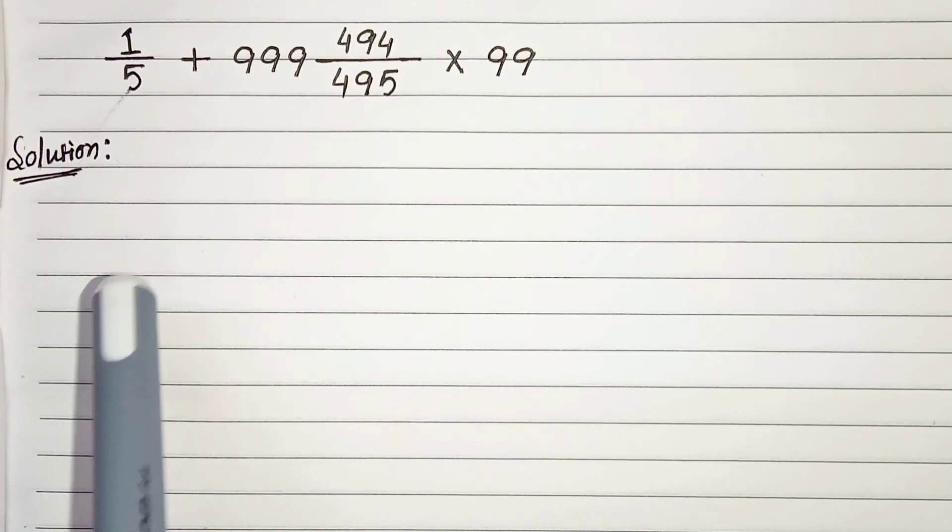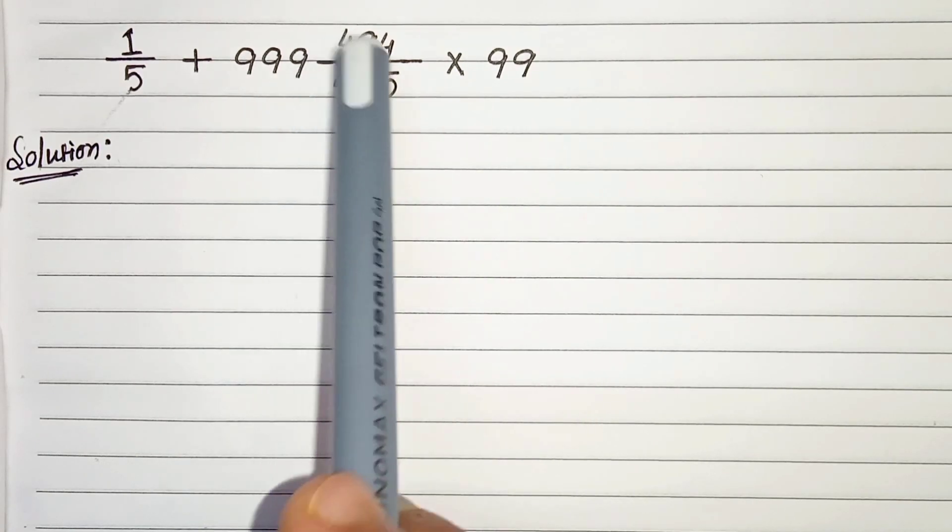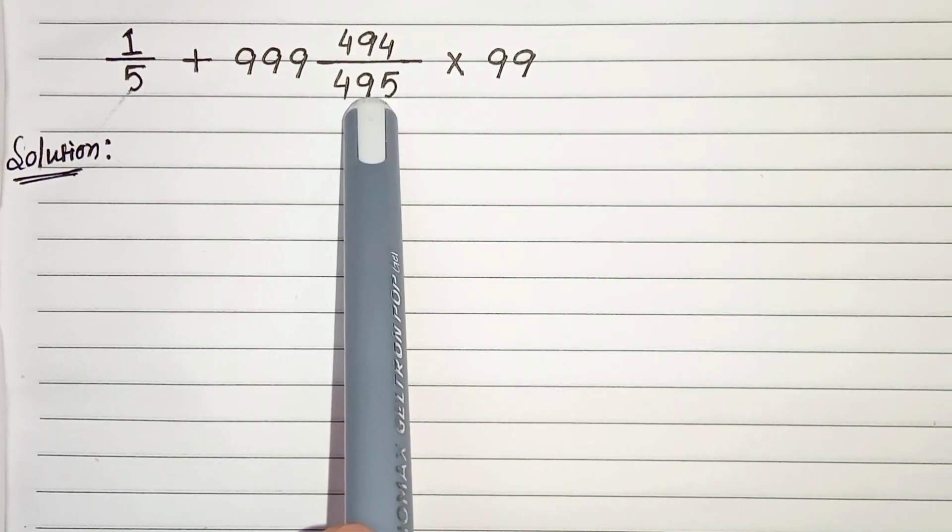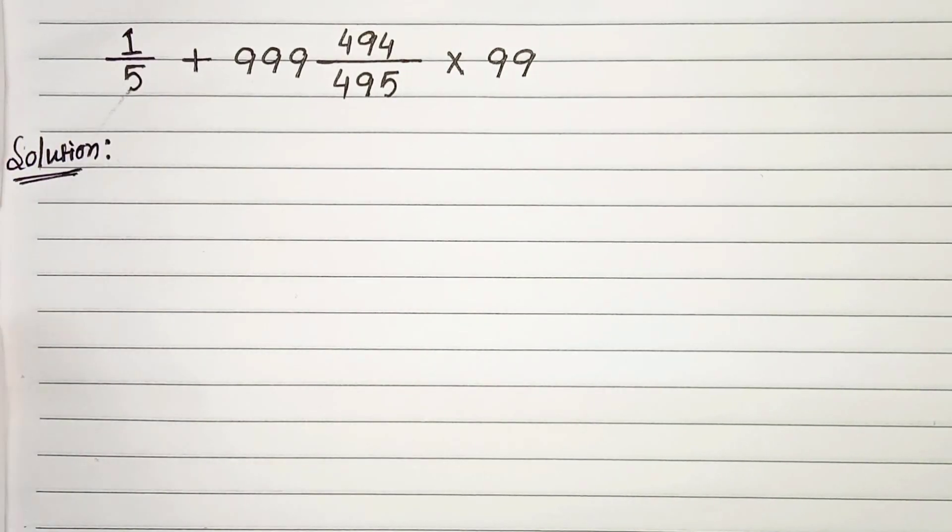Hello everyone, in this video we have 1/5 plus a mixed fraction which is 999 and 494/495 times 99. We have to evaluate this, so let's start.